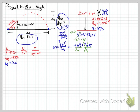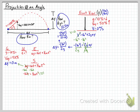We need to solve for time first, because we can't determine anything in the x-direction without it. To find time, we use the equation Δy = v₀t + ½at². Since Δy = 0 — the object ends up at the same height it started — we substitute zero and subtract v₀t from both sides. We can then cancel a factor of t from both sides and multiply by 2 to eliminate the half.